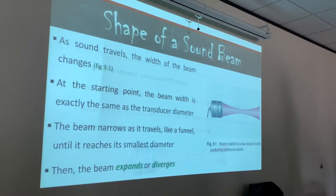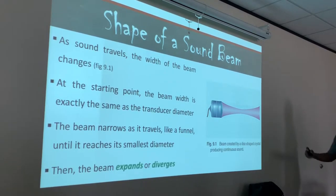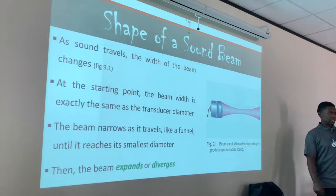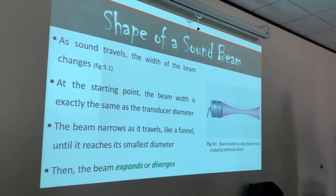As sound travels, the width of the beam changes, guys. You see right here — this is our hourglass-shaped beam. We're looking at this beam in actual profile. Because when we look at it straight on, it's actually shaped like a circle. When you look right in front of the beam, it's shaped like a circle. But we're looking at it in profile, our lateral view of this beam. It has this hourglass appearance in our profile view — like those profile views of babies. That's how we're looking at this ultrasound beam in a lateral view.